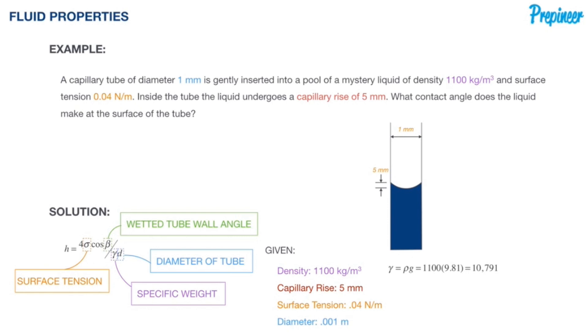We're going to determine the specific weight of this mystery liquid, simply the density times local gravity. We're going to get 10,791.